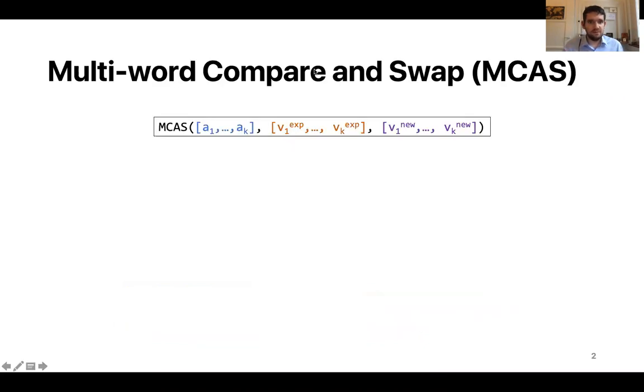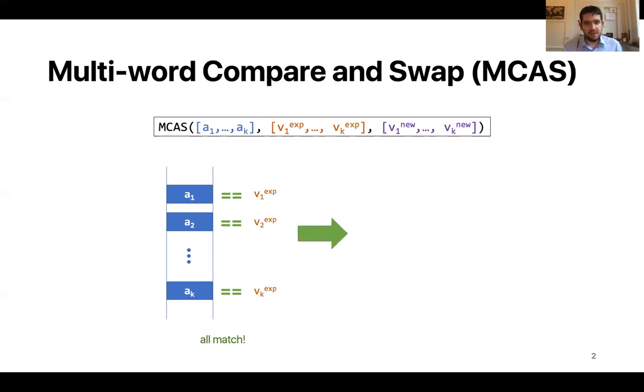Let's start with a brief overview of multi-word compare and swap or MCAS for short. MCAS is a generalization of the well-known and widely used compare and swap primitive for shared memory. MCAS takes a list of addresses, a list of expected values and a list of new values. It compares the addresses to their respective expected values and if all of them match, MCAS atomically installs new values in each address.